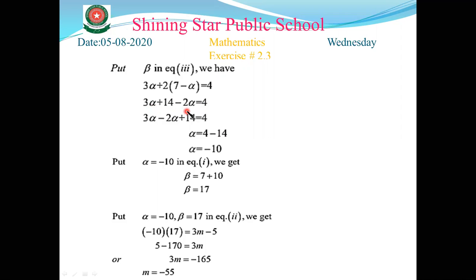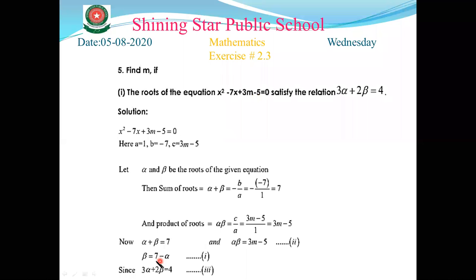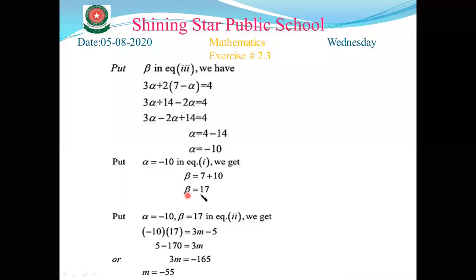Simplifying: 3α - 2α = α, and taking 14 to the right side gives α = 4 - 14 = -10. Now substituting α = -10 into β = 7 - α gives β = 7 - (-10) = 7 + 10 = 17. So α = -10 and β = 17.